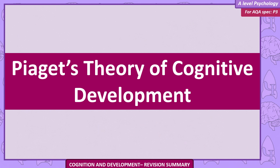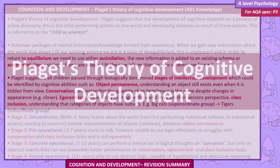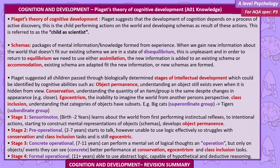Piaget's Theory of Cognitive Development. Piaget suggests that the development of cognition depends on a process of active discovery. This is the child performing actions on the world and developing schemas as a result of these actions. This is referred to as the child-as-scientist. Schemas are packages of mental information formed from experience.